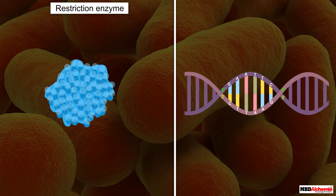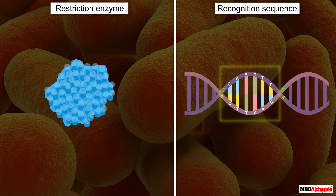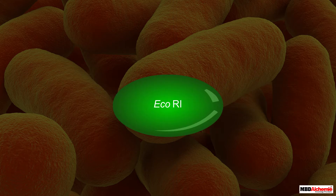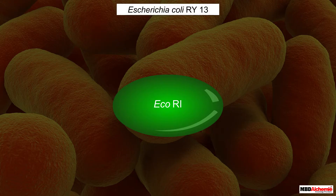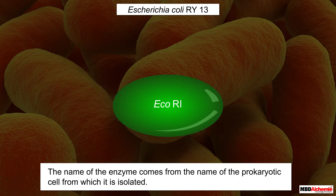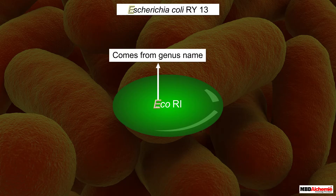Let us now discuss the convention used to give specific names to these enzymes. Taking the enzyme EcoRI as an example — it is isolated from Escherichia coli, RY13. The name of the enzyme comes from the name of the prokaryotic cell from which it is isolated. The first letter of the genus becomes the first letter of the enzyme name; as in the example, E comes from Escherichia, written in capital letter.